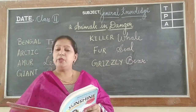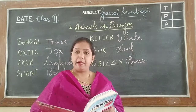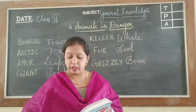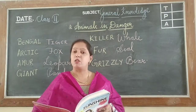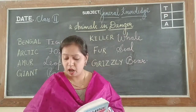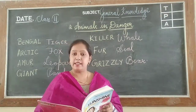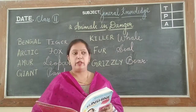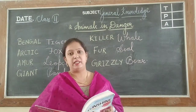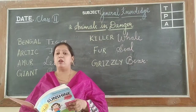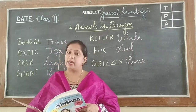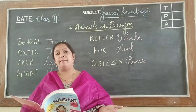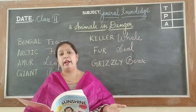Due to this, the number of animals is dropping — becoming less. Some animals are lost forever; they are called extinct — they are not there anymore. And some are about to get lost, meaning they are endangered — they are going to die very soon.